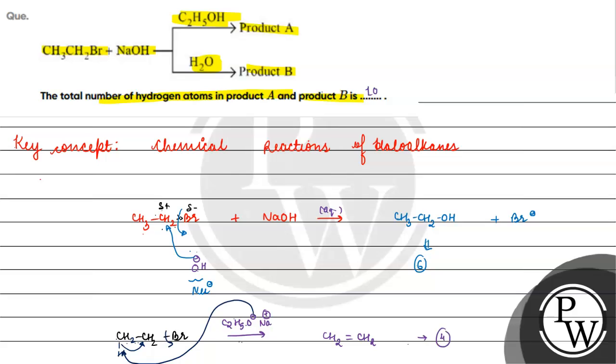How many total hydrogens? 6 plus 4 is 10. So 10 will be the answer for this question. I hope you understood it well. Thank you and all the best.